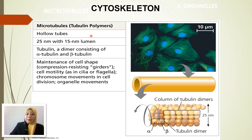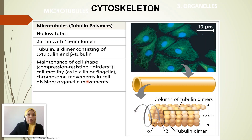For microtubules, their subunits are called tubulin — tubulin polymers. They form hollow tubes. The main functions of microtubules include: maintenance of cell shape, helping in cell motility or movement as in cilia or flagella, chromosome movement during cell division in mitosis and meiosis, and organelle movement.